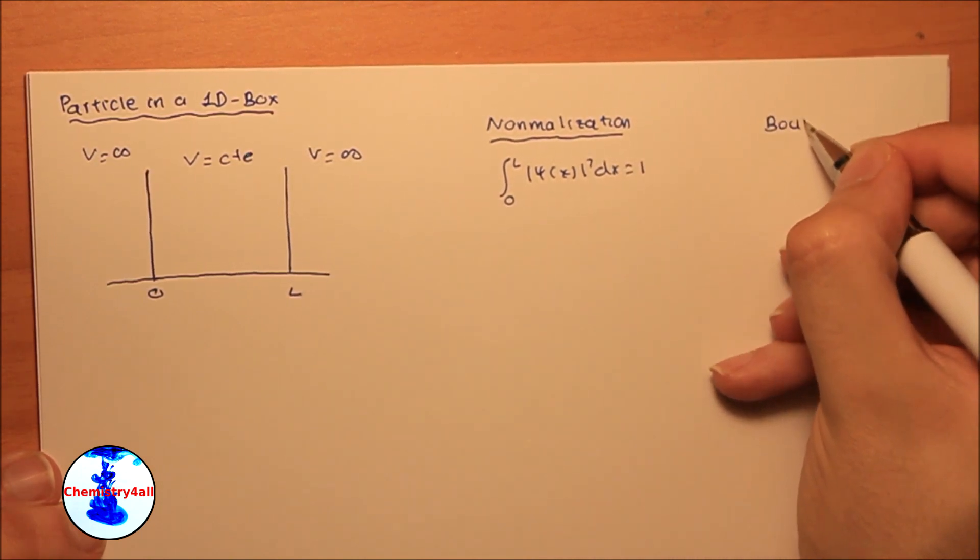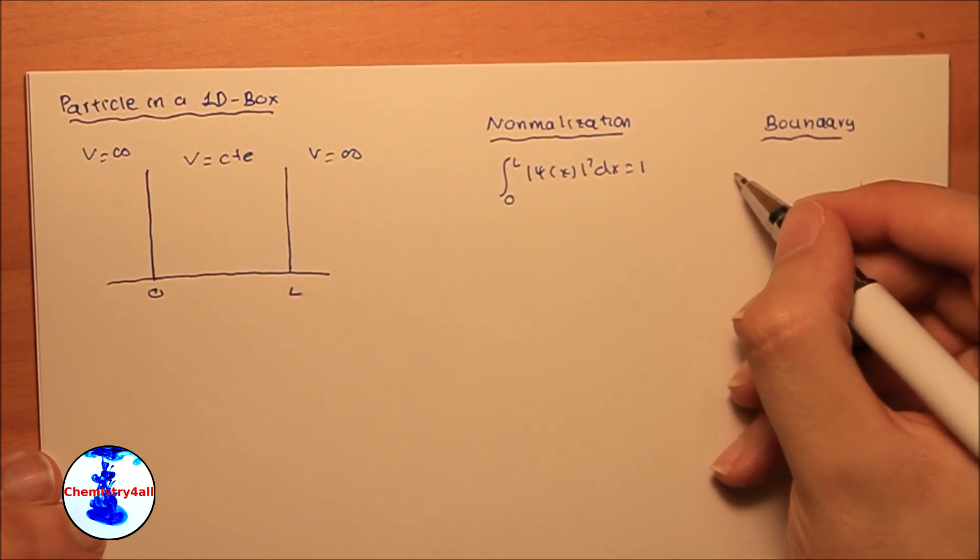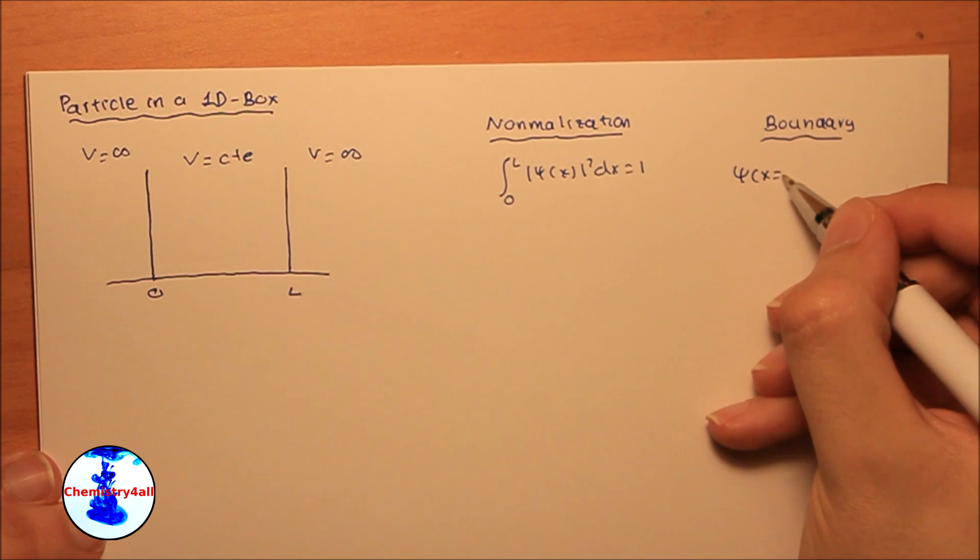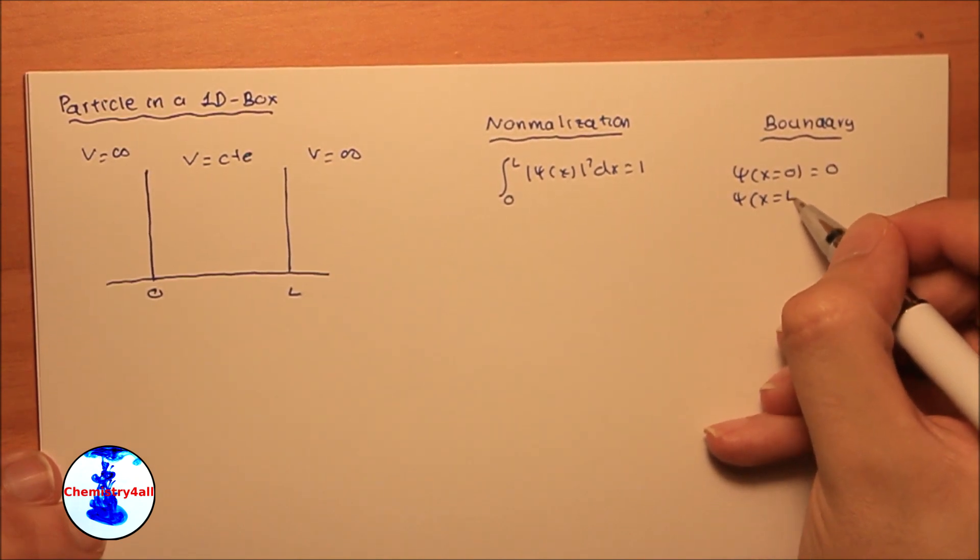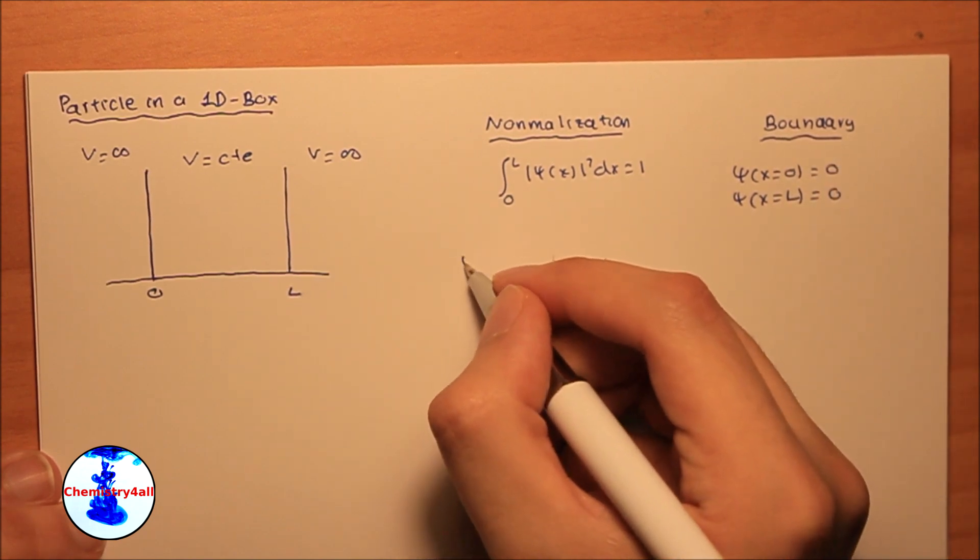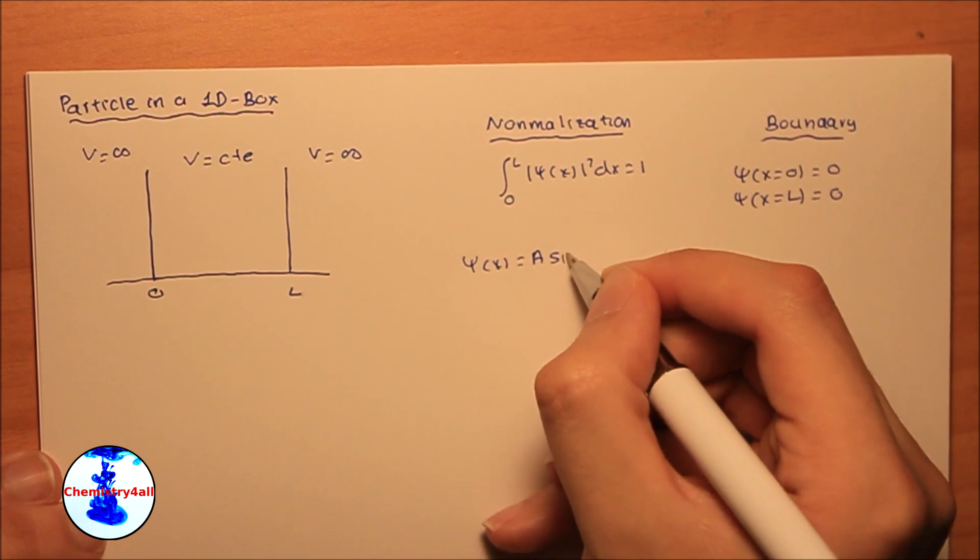By the way, in our case the particle is actually the electron. And the other condition is the so-called boundary condition, which basically means that the wave function at x equals 0 or x equals L has to be 0.